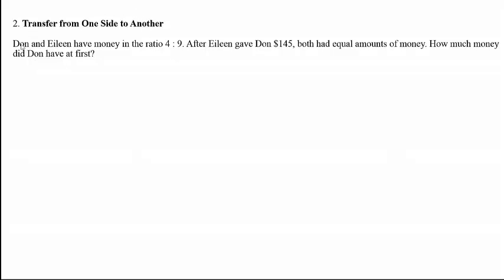In this question, Don and Eileen have money in the ratio 4 to 9. After Eileen gave Don $145, both had an equal amount of money. That means at the start, the ratio is 4 to 9, but after Eileen gave Don $145, they have an equal amount of money. We need to find how much money Don had at first.